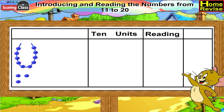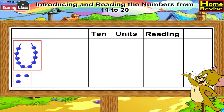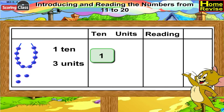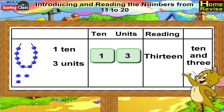In the third picture, there is a string of ten beads and three more beads, which means it is one ten, three units. So under tens you write one, under units you write three. You can read it as thirteen, or ten and three.